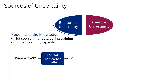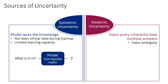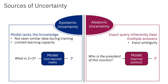For example, given an arithmetic question — what is two plus three — if the model has never learned math during training, it would not know the answer. On the other hand, aleatoric uncertainty occurs when the input query inherently bears multiple answers. One important case is when the input query is ambiguous. For example, given the query 'who is the president of this country,' the model would be uncertain about the answer even if it is very knowledgeable in political facts, because it is unclear what country the query is referring to.